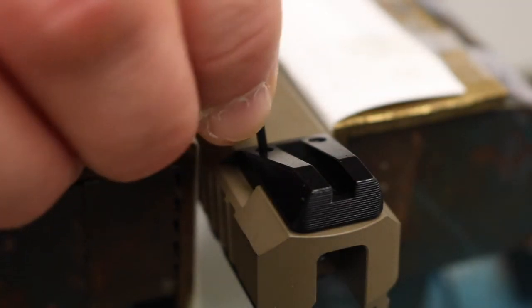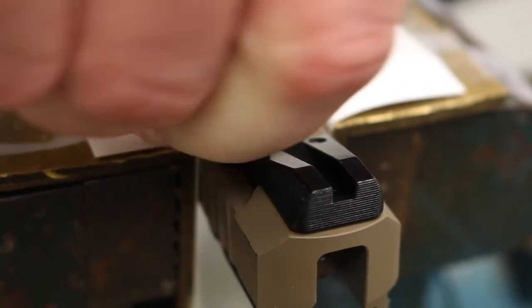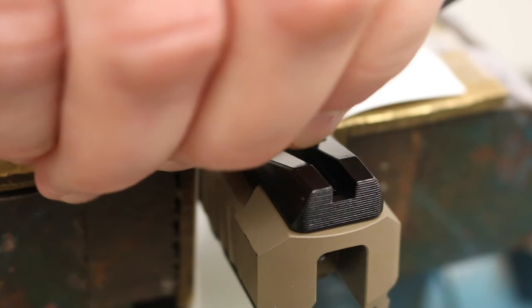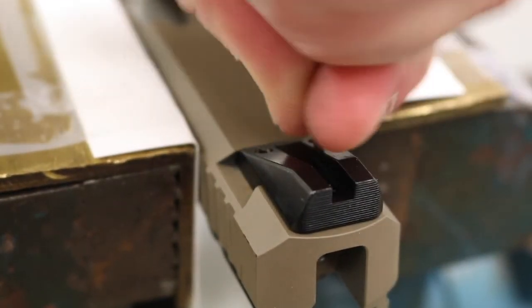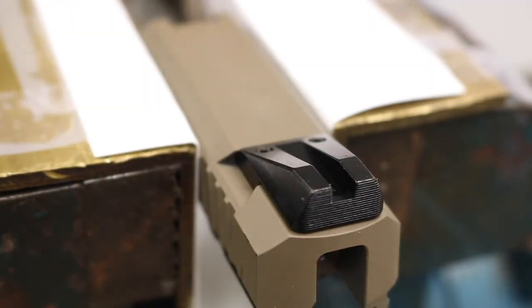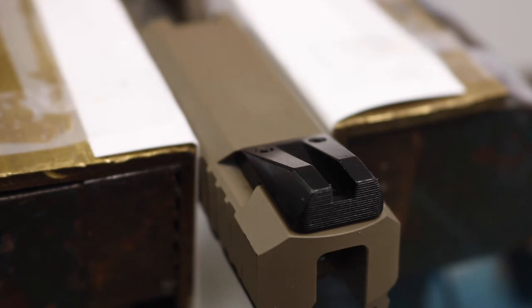We're going to begin by loosening the set screws on the rear sight with the appropriate hex key. As you can see, those screws are a little snug. If you put a wrench on and try to force it and it doesn't move, rather than strip out the screw or the wrench, get a soldering iron and apply a little bit of heat to that screw. If there's any Loctite, that'll soften it up and make your life quite a bit easier.